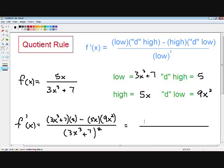So the first thing I want to do is distribute the 5 with the 3x cubed plus 7. So 5 times 3x cubed is 15x cubed plus 5 times 7, which is just positive 35, minus 5x times 9x squared, which is 45x cubed. And the denominator stays the same.